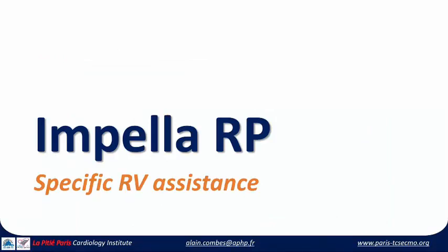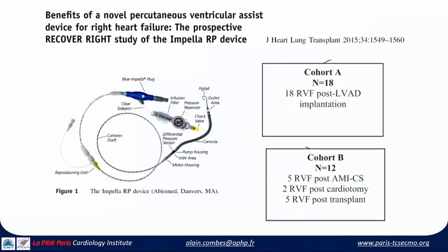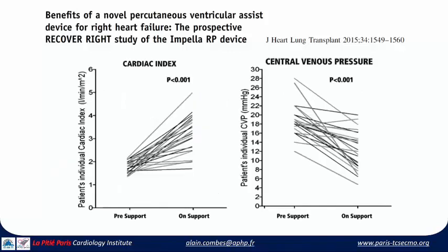For the future, there is a new device called the Impella RP — a specific RV pump inserted through the femoral vein into the right atrium, right ventricle, and then into the pulmonary artery. Published reports include a first experience in STEMI patients and a series of 30 patients: 18 post-LVAD, 12 post-STEMI, cardiotomy, and post-transplant, showing it is possible to increase cardiac index and decrease CVP. However, evidence on long-term outcomes and weanability is limited, and the main problem is cost — close to 15,000 euros, or probably more than 20,000 Australian dollars — though the concept is very good.